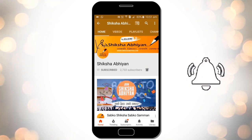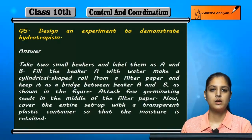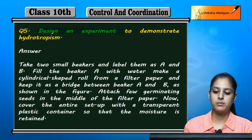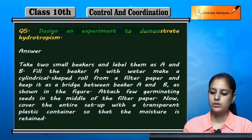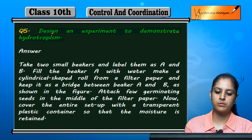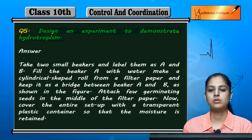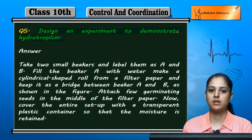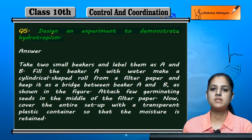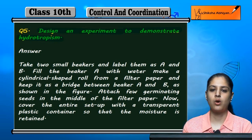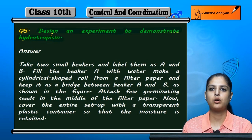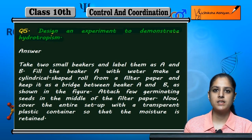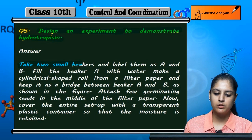Question number five: design an experiment to demonstrate hydrotropism. Hydrotropism is the dependence on water of the growth of a plant or any seed. In this experiment, we have two small beakers.